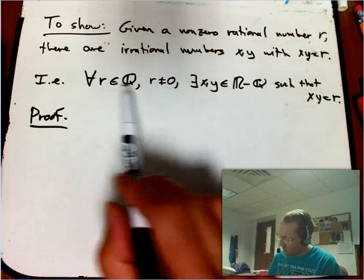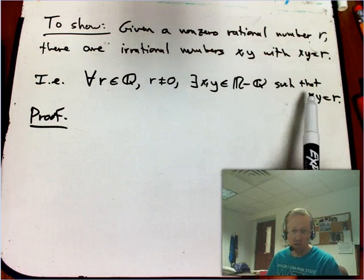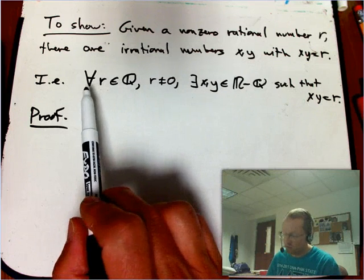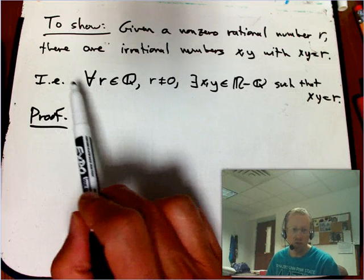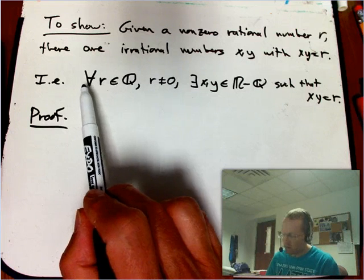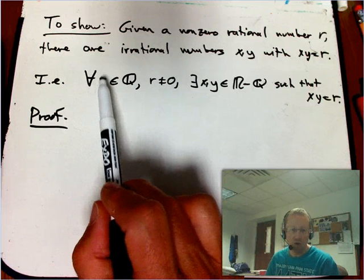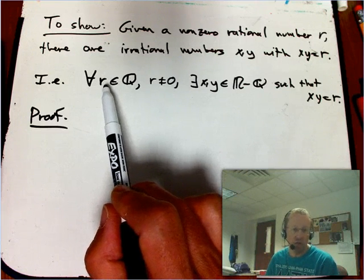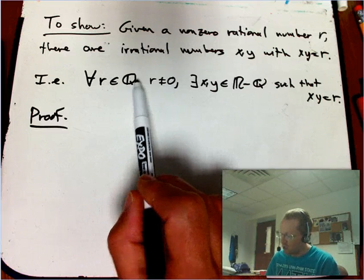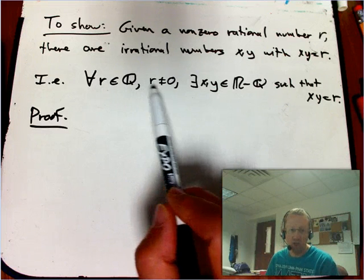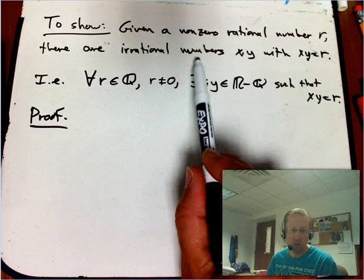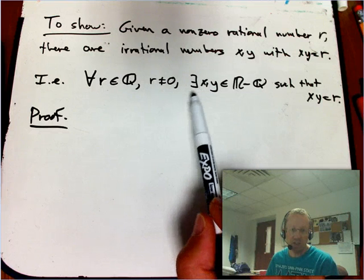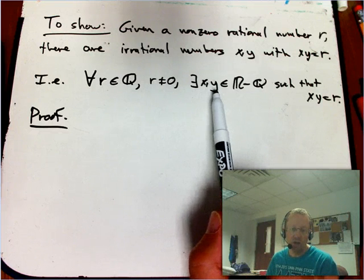So here I've written it a little bit more symbolically, just to get people used to the notation when it's used in the book or when we want to use this for abbreviation. And for every, it says for every R, which is just a letter, and then we tell it, and then we say where that lives, what kind of object it is, in Q, the set of rational numbers, with R not equal to zero, that's the non-zero part.